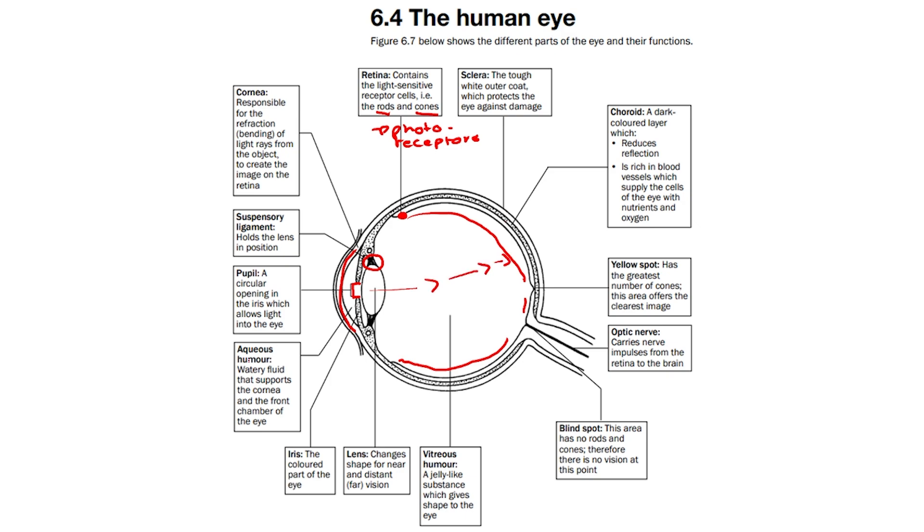We then have the aqueous humor, which is a watery fluid between the pupil and the pupil. This watery fluid supports the cornea and the front chamber of the eye, therefore aiding...